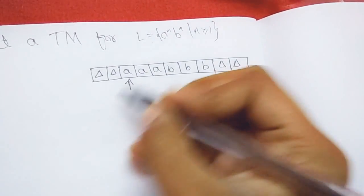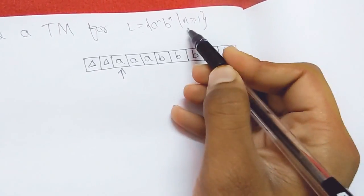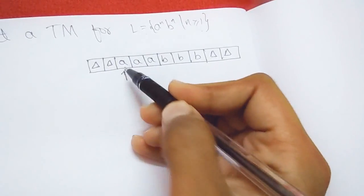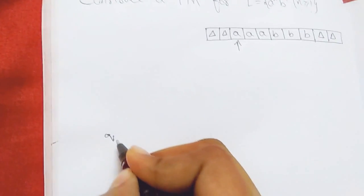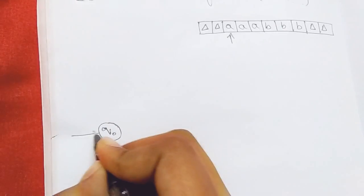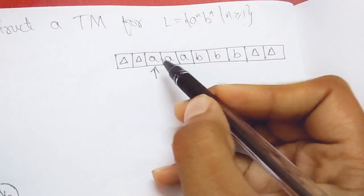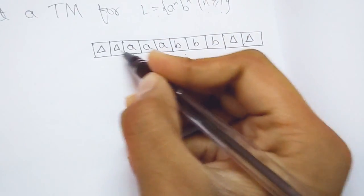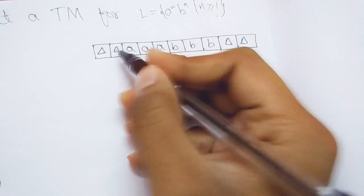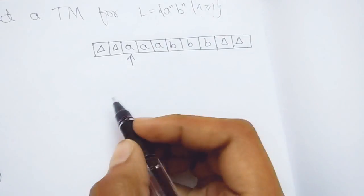The Turing machine has a header which is both a read and write header. Since n ≥ 1, I'll start with the first A, beginning construction with q0 as the initial state. First I need to process A, then the corresponding B. To know that I have processed A, I replace this A with X, and then I replace the corresponding B with Y after processing.